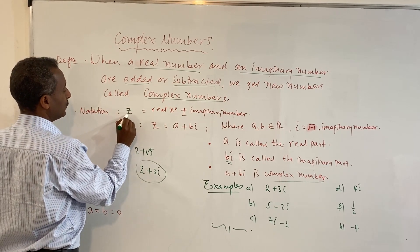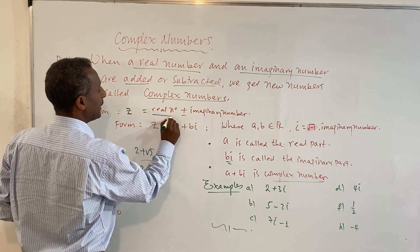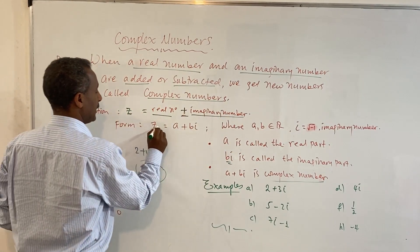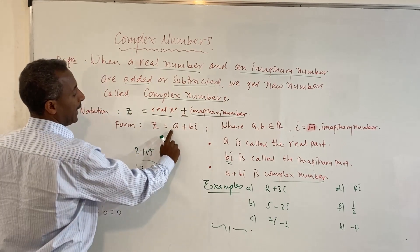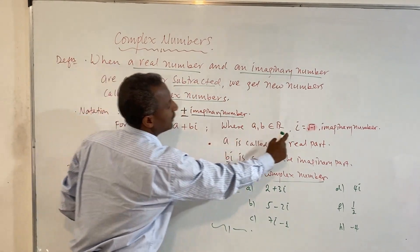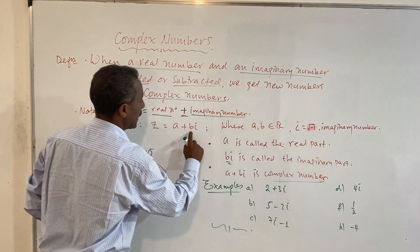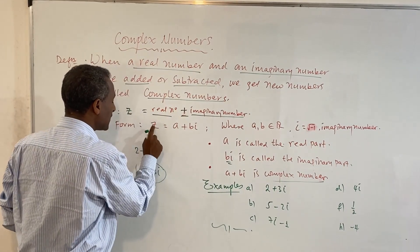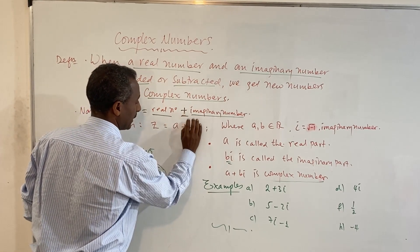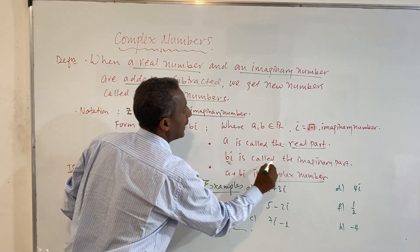A complex number Z is equal to a real number plus or minus an imaginary number. We write Z is equal to A plus Bi, where A is the real number and B is the imaginary number. The complex number Z has two parts: the real part and the imaginary part. A is called the real part and B is called the imaginary part.